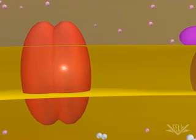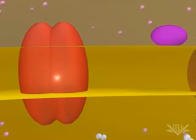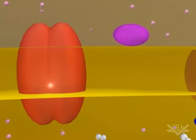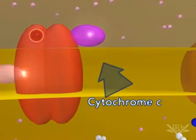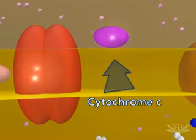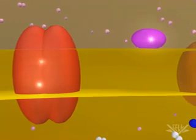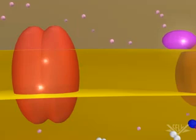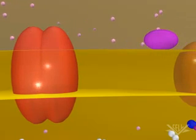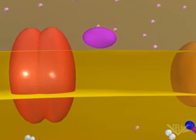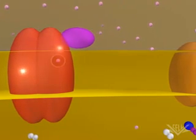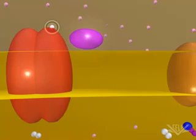Each electron is then passed from the cytochrome BC1 complex to cytochrome C. Cytochrome C accepts each electron one at a time, and one hydrogen ion is pumped through the complex as each electron is transferred.